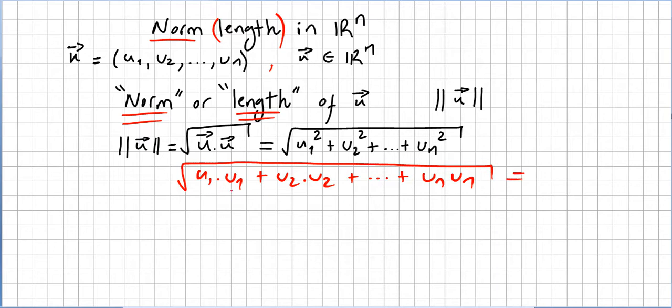So we're going to get u1 times u1, that's u1 squared plus u2 squared, etcetera, components one by one, till un squared. Sometimes it's easier to write this this way. Don't forget we have a square here. So we can write u1 squared plus u2 squared plus u2 squared plus un squared.